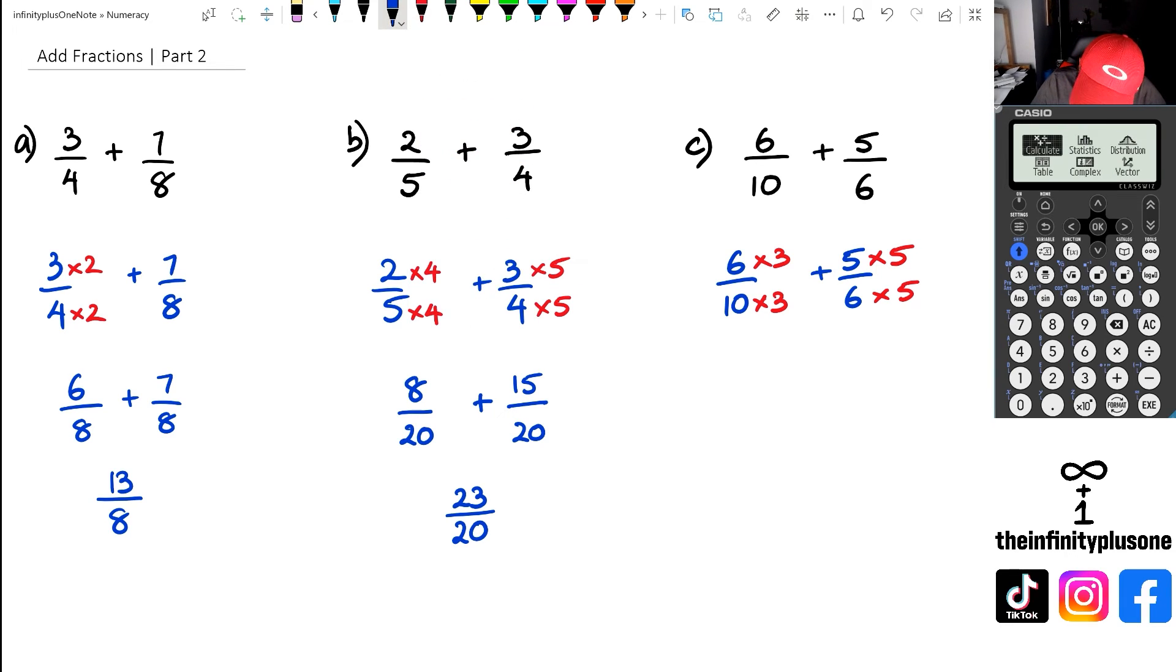And when I do this, I am going to get six times three, which happens to be 18 over 30, plus five times five, which is 25 over 30. And because 30 is the same number, the same denominator, I can just leave 30 together. And then I've got 18 plus 25, which happens to be 43.